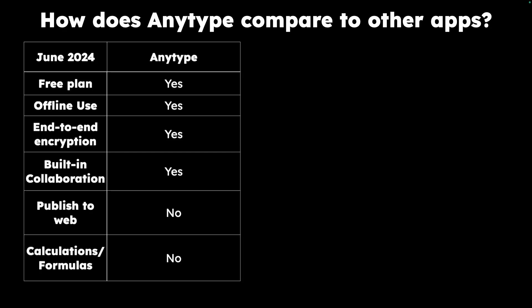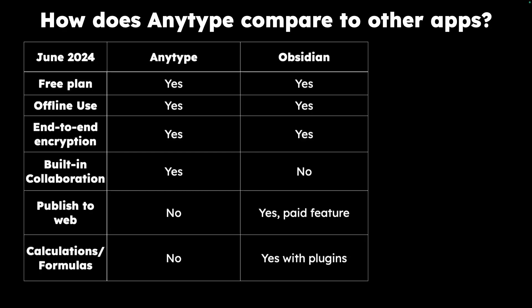AnyType does have built-in collaboration. Obsidian has very similar features to AnyType's free plan — offline use and end-to-end encryption — but they don't have built-in collaboration, so Obsidian works best as a personal writing tool and isn't great if you want to collaborate on a project with someone else.